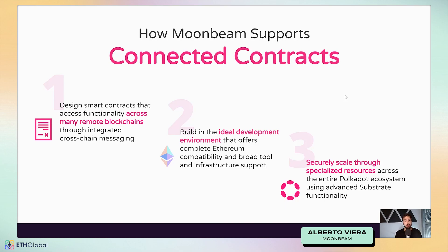Moonbeam supports connected contracts through three main ideas. First, design smart contracts that access functionality across many blockchains through integrated cross-chain messaging — Moonbeam offers interfaces for XCM internally and works with teams like Axelar, Layer Zero, and Wormhole to make these integrations seamless. Second, build the ideal development environment with full Ethereum compatibility and broad tool and infrastructure support — we have The Graph, Gnosis, and all the important infrastructure components.